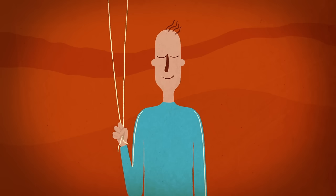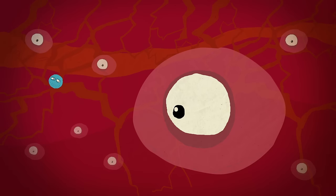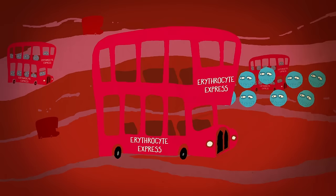But getting oxygen throughout our bodies is a surprisingly difficult task. Gas enters cells by diffusing in from their surroundings, and that only happens efficiently over tiny distances. So for oxygen to reach the cells within our bodies, it needs a transportation network.